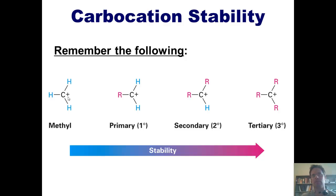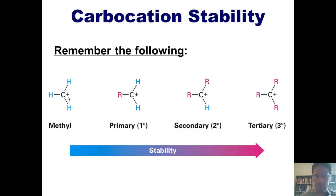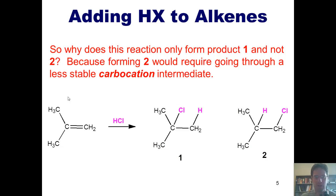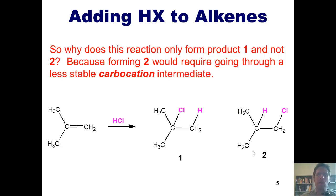I once heard an organic chemistry professor joke that primary and methyl carbocations are so unstable that they may only really exist in extreme conditions like those found in interstellar space. With that as background, we get back to our question: why does this reaction only form product 1 and not product 2?